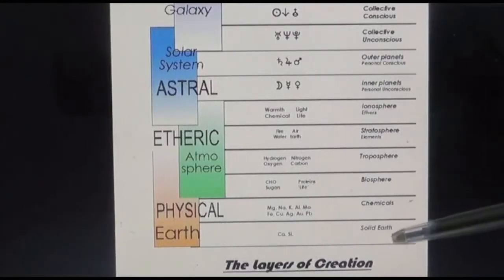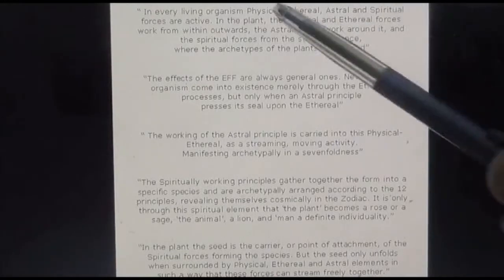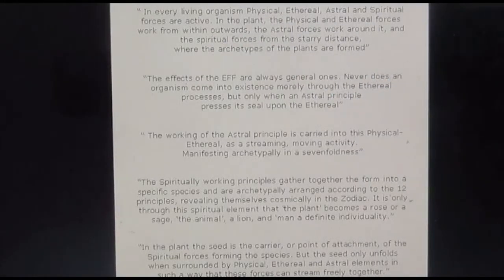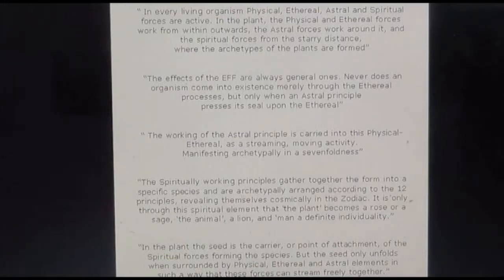There's actually 12 layers that we can identify in this basic structural form. Leavgood in 1951 made it very clear that in every living organism, physical, etheric, astral, and spirit forces are active. In the plant, the physical and etheric forces work from within outwards, and the astral work around it, and the spiritual forces work from a starry distance, where the archetypes of the plants are formed.